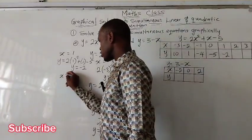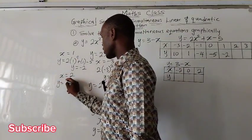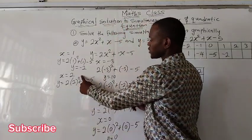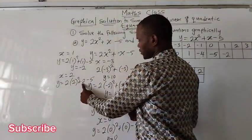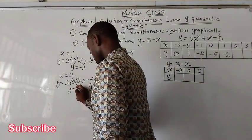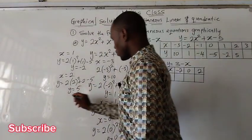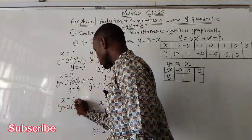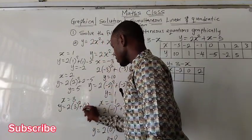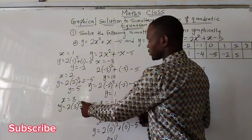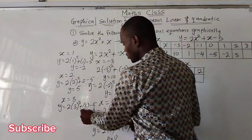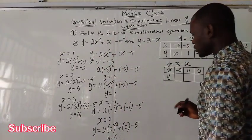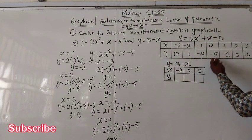When x is positive 2, we have 2 times 2 squared plus 2 minus 5. 2 squared is 4 times 2 is 8; plus 2 is 10; minus 5 gives us positive 5. When x is positive 3, y equals 2 times 3 squared plus 3 minus 5. 3 squared is 9 times 2 is 18; plus 3 is 21; 21 minus 5 is 16. So y is 16. We now have all corresponding values of y for the quadratic.